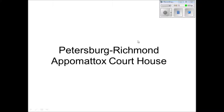Now I'm going to talk about Petersburg, Richmond, and Appomattox Courthouse. Richmond was the capital of the Confederacy, and that was the goal of a lot of Union armies, including the Army of the Potomac. That was what Robert E. Lee and his Confederate Army of Northern Virginia was trying to protect. He was surrounded around Richmond by the army of Ulysses S. Grant.